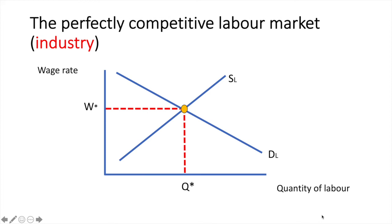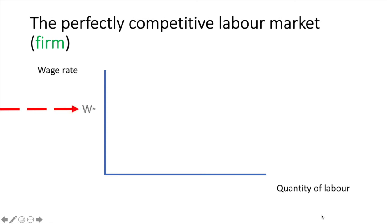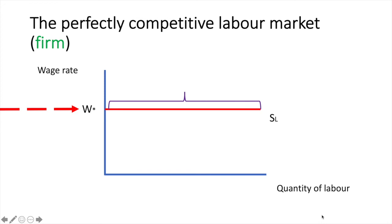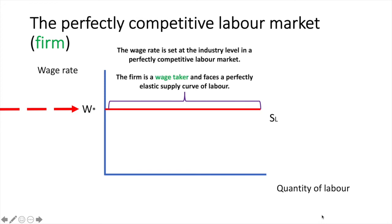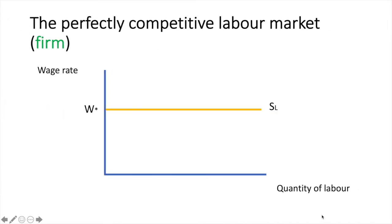Let's take this wage rate from the industry and see what it looks like for the firm. The firm is a wage taker and faces a perfectly elastic supply curve of labour. The wage rate has been set at the industry level and a firm cannot pay a wage above or below this rate. The firm's demand curve in this labour market structure is based on the marginal revenue product of their workers, therefore the demand curve will be equal to the marginal revenue product of their workers.